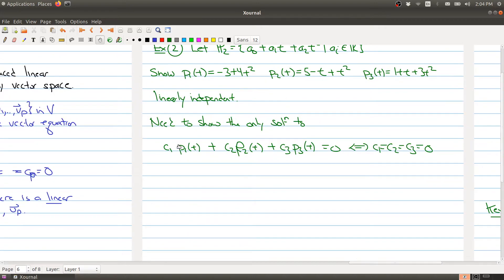So how do we do this? What we're going to do is expand out each of these pieces here. We get C_1 times minus 3 plus 4t squared plus C_2 times 5 minus t plus t squared plus C_3 times 1 plus t plus 3t squared. And so what we want to do is now expand this out and collect terms. So we have all of our constant terms would be minus 3C_1 plus 5C_2 plus C_3. All the coefficient of t would be, well there's no t here, we would have a minus C_2 there and we have a plus C_3 here. And then we collect together all the coefficients of t squared. So we would have 4C_1 plus C_2 plus 3C_3 t squared. And we want this equal to the 0 polynomial, which is 0 plus 0t plus 0t squared.